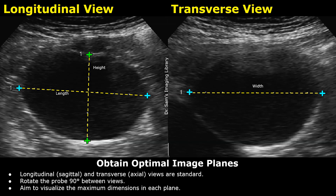Hello everyone, this is Dr. Sam and today you will learn how to measure cysts on ultrasound. We will mainly focus on measuring simple cysts in various organs. On ultrasound, a simple cyst appears as an anechoic round structure with posterior acoustic enhancement.